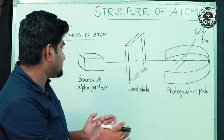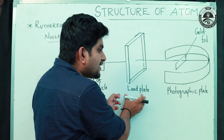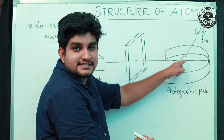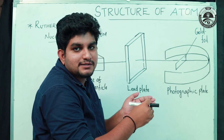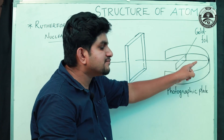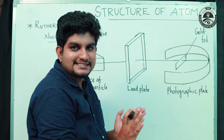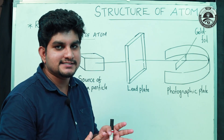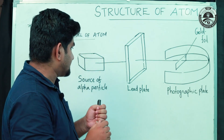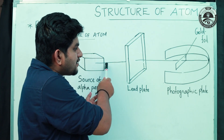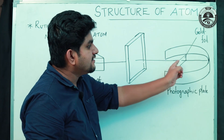In the experiment there is a source of alpha particles, a lead plate, a gold foil, and in the back we observe the movement of the alpha particles on a fluorescent screen. Now let's look at the observations — most of the alpha particles pass through the gold foil without any deviation.